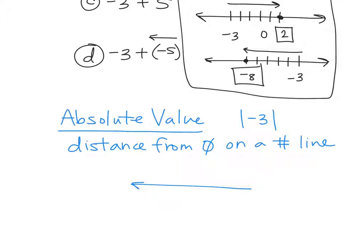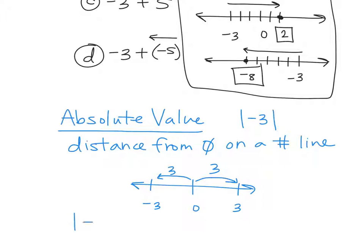So think about a number line. Here's zero. If I go to negative 3 or I go to positive 3, my distance here is 3 units. Yes, I'm at negative 3, but the distance away is 3 units. So if I go this way, how many units am I away? Three. The absolute value is always a positive number — it's always just how far away are you. I can't be negative 3 away; I'm going to be 3 units away. So when we say what's the absolute value of negative 4? 4. What if I said what's the absolute value of 7? 7. So it always becomes the positive.